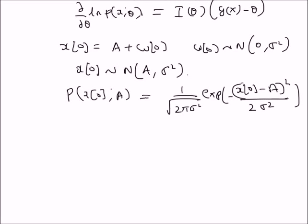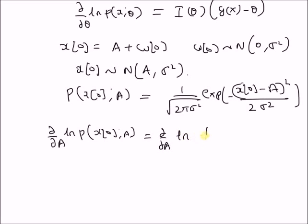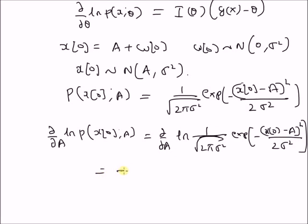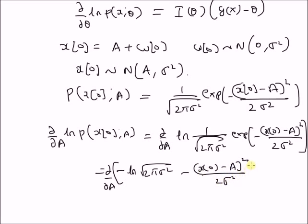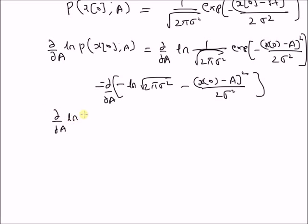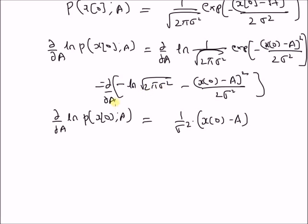This is the likelihood function of the parameter a with the observation x(0). The first derivative of the log-likelihood with respect to a is the derivative with respect to a of: log(1 / sqrt(2*pi*sigma-squared)) minus (x(0) - a)^2 / (2*sigma-squared). Clearly, the first derivative with respect to a of the log-likelihood equals (1/sigma-squared) * (x(0) - a), since the derivative of log(sqrt(2*pi*sigma-squared)) with respect to a is 0.